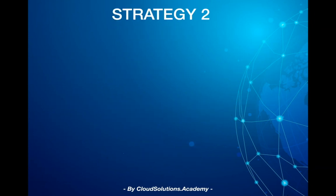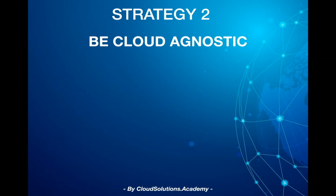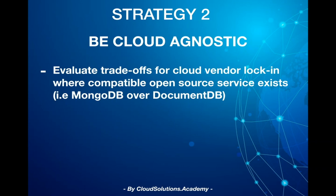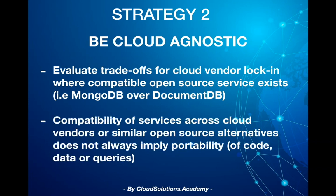The second strategy is to be cloud agnostic. As part of this strategy, you evaluate trade-offs for cloud vendor lock-in where compatible or similar open source services exist. For example, choosing MongoDB over Amazon DocumentDB. And when you talk about compatibility of services, that doesn't always imply portability. You may not have 100% compatibility when you move from MongoDB to a compatible service like DocumentDB. You need to evaluate what features and functions are supported in the compatible product, and you may end up making changes to the code or rewriting queries in some cases.